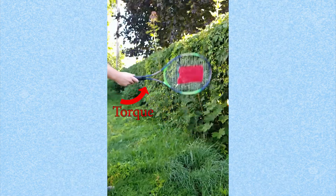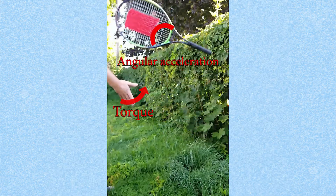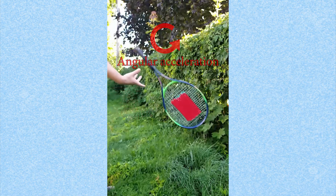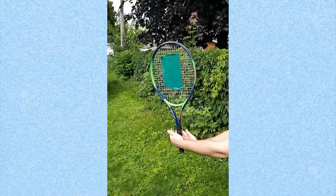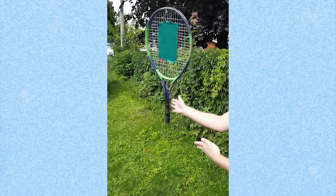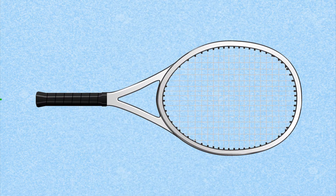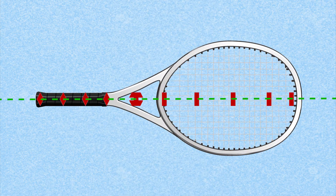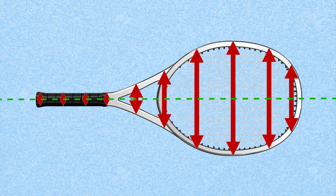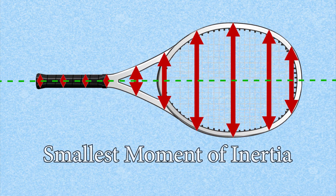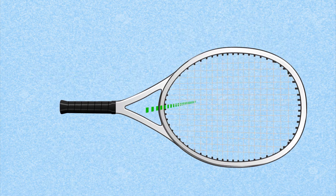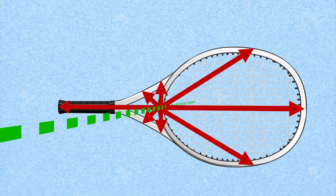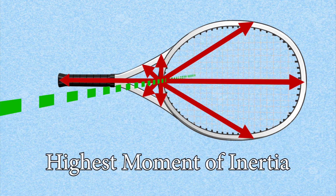Essentially, the moment of inertia is how much angular acceleration an object can receive when given a certain torque — or in other words, how fast it can spin given how hard you spin it. The mass of the racket is distributed closer to the first axis than any other, so it spins the fastest, and we say it has the smallest moment of inertia. On the other hand, the racket's mass is distributed the furthest away from the third axis, and thus it spins the slowest and has the highest moment of inertia.